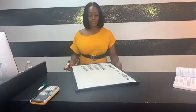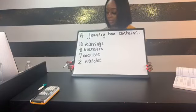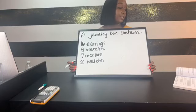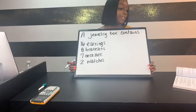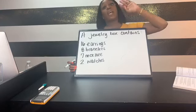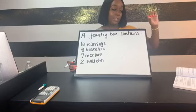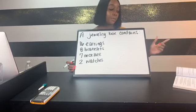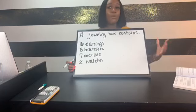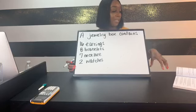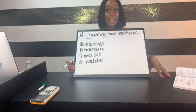So the question says: a jewelry box contains 16 earrings, 8 bracelets, 7 necklaces, and 2 watches. The first question says: what is the ratio of bracelets to watches? An acronym we use throughout the book is KISS IT, which is short for Keep It Super Simple. What we always want to do anytime we're dealing with any topic for this test is you want to dumb it down — put it in a certain number of steps so that it's easier to retain.